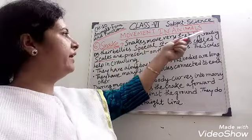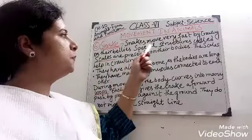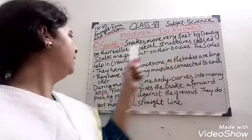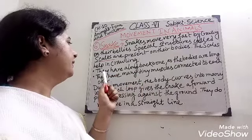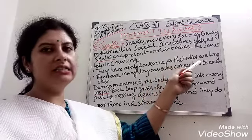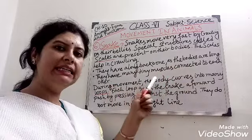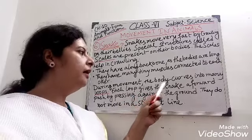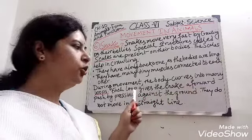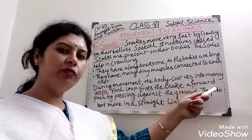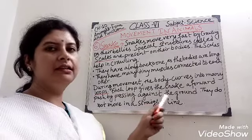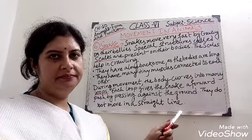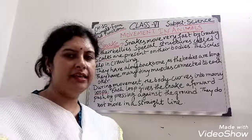Our sixth animal is the snake. Snakes move very fast by crawling on their bellies. Special structures called scales are present on their bodies and help in crawling. They have a long backbone and many tiny muscles connected to each other. During movement, the body curves into many loops. Each loop gives the snake a forward push by pressing against the ground. Snakes do not move in a straight line.